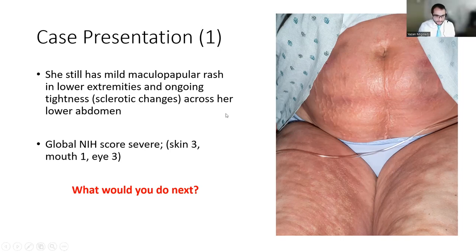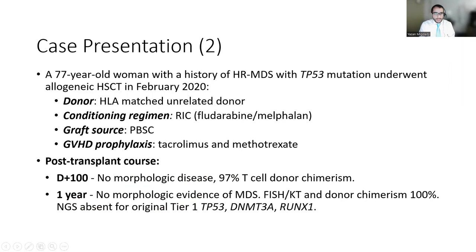Moving on to the second patient, seen at Huntsman: a 77-year-old woman with history of high-risk MDS with TP53 mutation who underwent allogeneic transplant in February 2020 with an HLA-matched unrelated donor using reduced-intensity conditioning with fludarabine/melphalan and standard-of-care GVHD prophylaxis with methotrexate and tacrolimus. The first year after transplant was uneventful, with no morphological evidence of MDS at the one-year mark, cleared baseline mutations, and 100% donor chimerism.